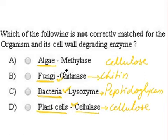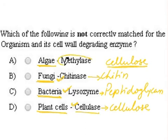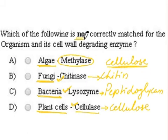In case of algae, the cell wall is made up of cellulose, but the enzyme given here is methylase. Since the question asks for what is not correctly matched, Option A — algae with methylase — is the incorrect matching.